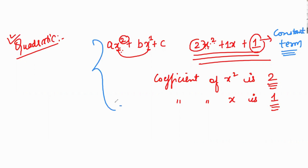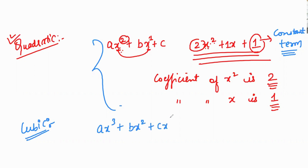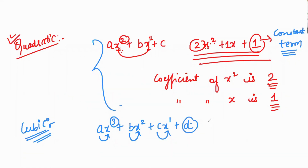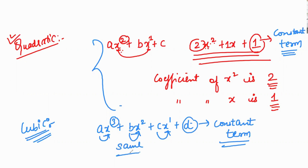Any doubt in this concept? No? Next is cubic. Do you have any idea what cubic is? No? So cubic means the highest power is 3. For example, ax cubed plus bx squared plus cx plus d — the highest power is 3, so this is known as a cubic equation. Here, a is the coefficient of x cubed, b is the coefficient of x squared, c is the coefficient of x, and d is the constant. The condition is that the variable x must be the same throughout.